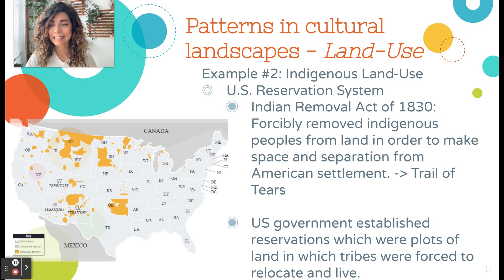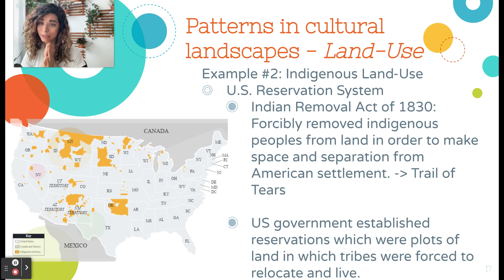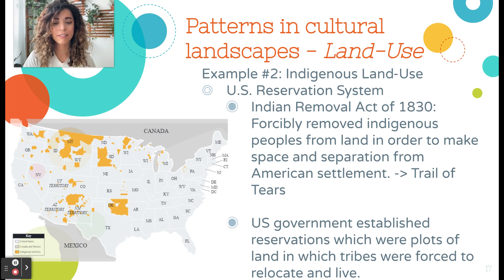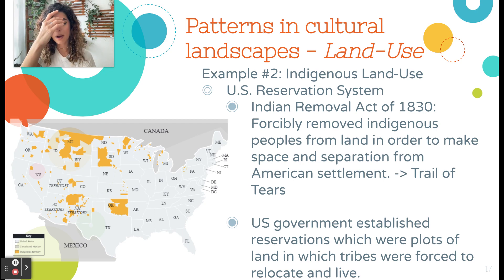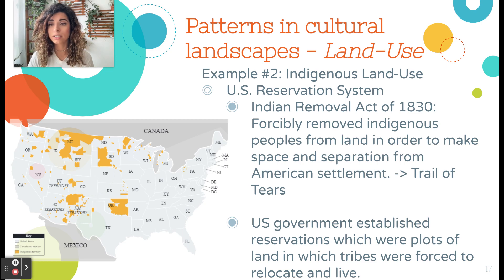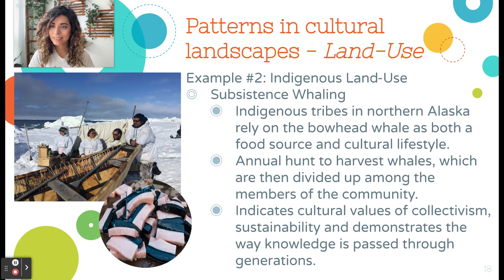Another example involves indigenous land use and the US reservation system. In 1830, the Indian Removal Act forcibly removed indigenous people from their land to make space for American expansion — also known as the Trail of Tears. The US government established reservations, plots of land where tribes were forced to relocate and live. This reflects the cultural norms and values of the US government at that time, and arguably continuing into the present, where indigenous people were not treated as equal and were forced into specific designated areas.